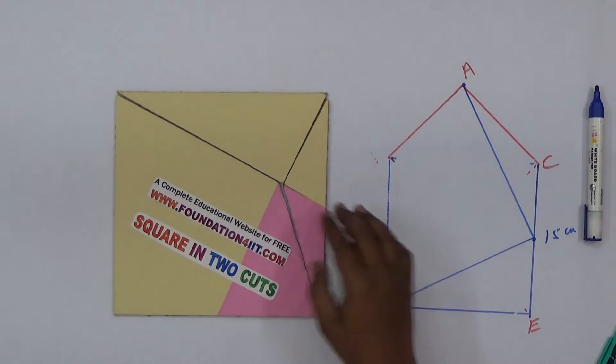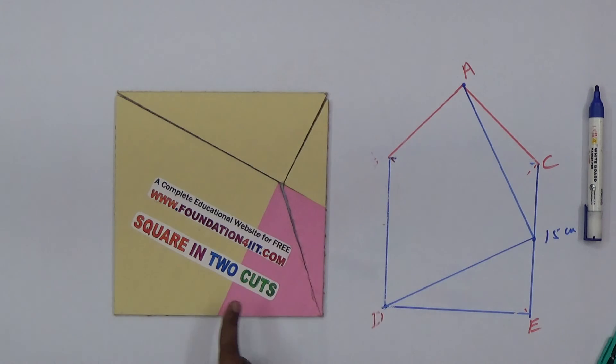This is the geometrical concept you can apply. By two cuts we can form the square. This is a task you can give for children to solve in their own way. Thank you for watching this video. I hope you understood well.